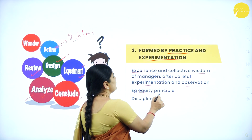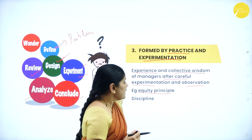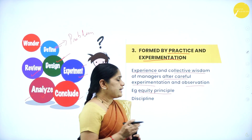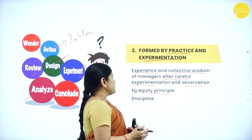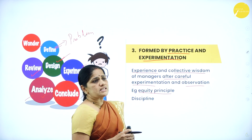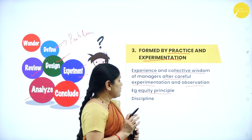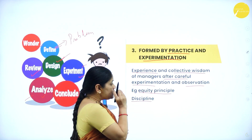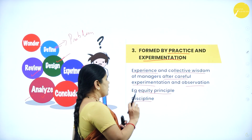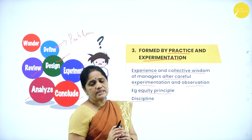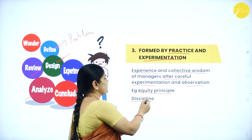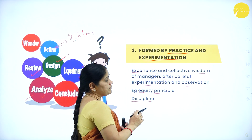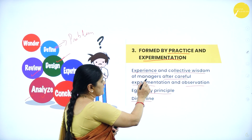For example, take the equity principle. The equity principle tells us that all organizational employees should be considered equal — there should be no divisions based on race, caste, creed, or religion. Next comes discipline: if there is no discipline among employees, it is very difficult to run the organization. We need rules of conduct for all employees. They arrived at the equity principle and discipline principle only after experimentation and observation. So these principles are formed by practice and experimentation.